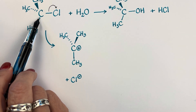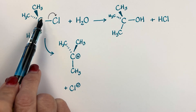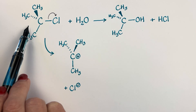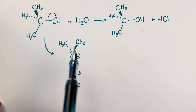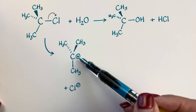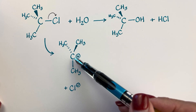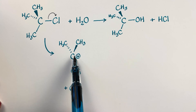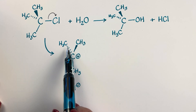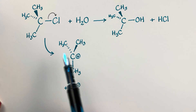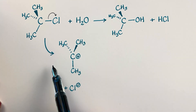We started out with sp3 hybridized carbon here — a tetrahedral structure with 109.5 degrees between all these bonds. But now, by virtue of this chloride leaving, we are left with this carbocation that has sp2 hybridization. That means we have an empty pure p orbital on either side of this. This is trigonal planar, which means that something can then come in and attack on either side — that's our nucleophile, our water. It can come in on this side, or it can come in on this side.